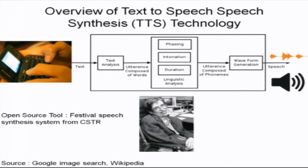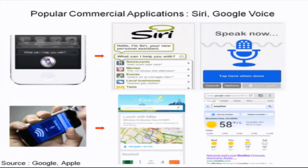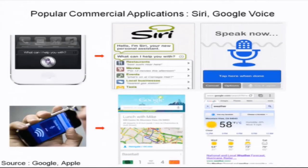Popular commercial applications include Siri and Google Voice. In these, text-to-speech synthesis plays the role of speaking results back to the user — for example, querying a restaurant via Siri: the system pulls the information and then speaks the result to you. This is especially useful while driving, where you cannot look at a map but can listen to spoken directions. The same applies to Google Voice.